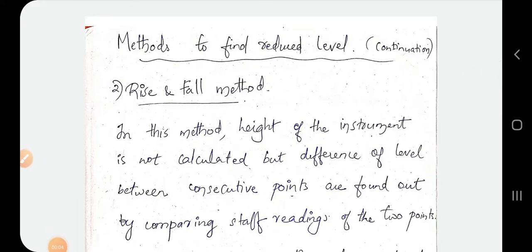Now we will see how to find the reduced level of different points using the height of the instrument method. We will have a few problems and three types of problems.